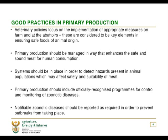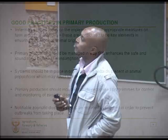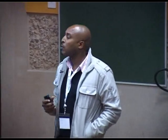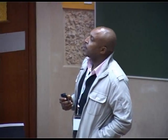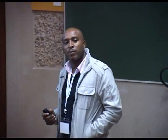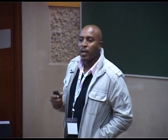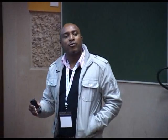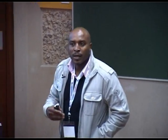Primary production should be managed in a way that enhances safe and sound meat for human consumption. Systems should be in place in order to detect hazards present in an animal population which may affect the safety and suitability of meat. For instance, on farm, the farmers are responsible to make sure that they deworm their animals.